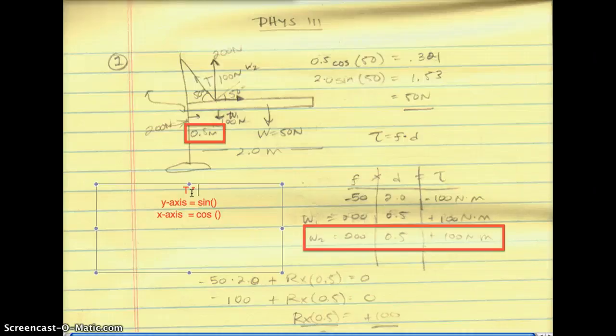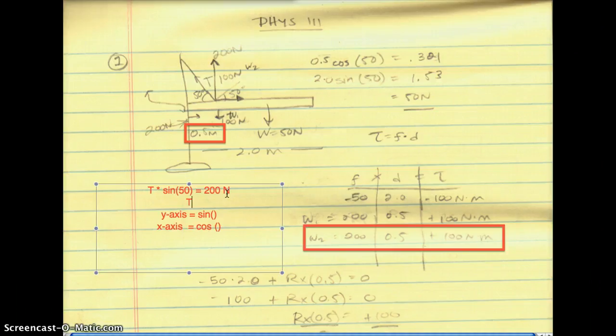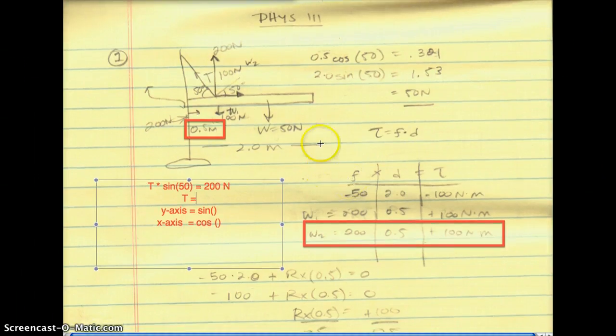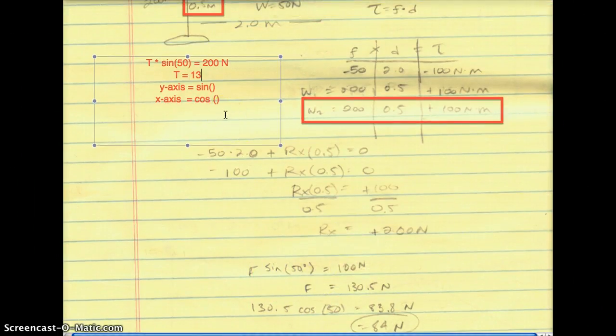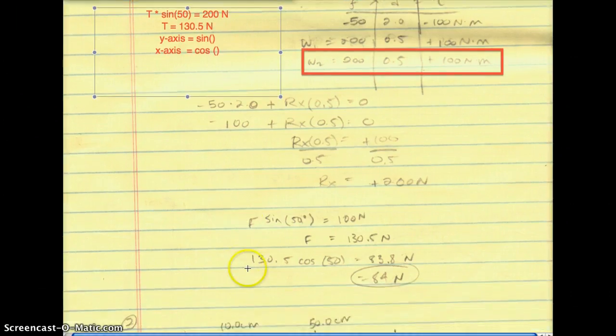We're solving for tension, so we can plug in tension multiplied by sine 50 degrees equals our y component. Because we don't know tension, we're just going to plug in our y component here, which is our 200 newtons. We solve for T. T equals 130.5 newtons. I put F instead, but T will actually equal 130.5 newtons. So there's your 130.5 newtons.